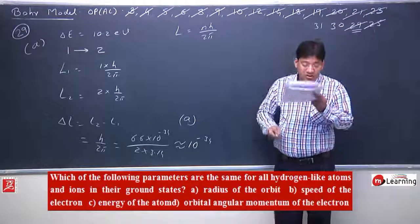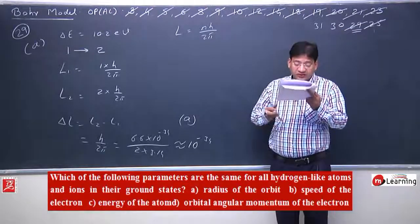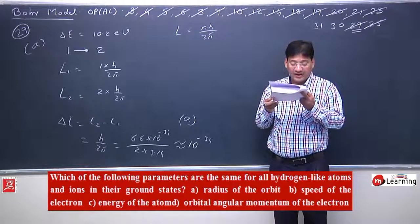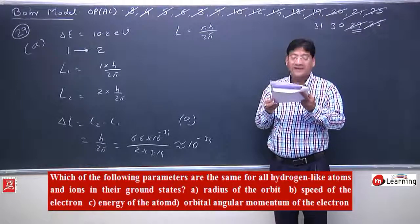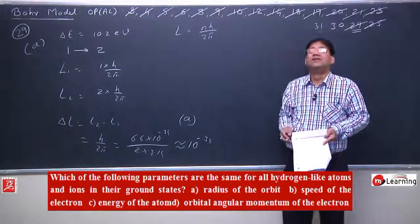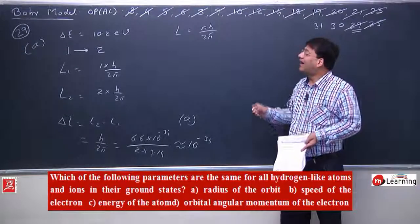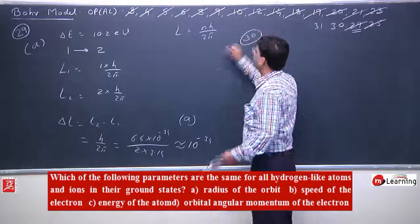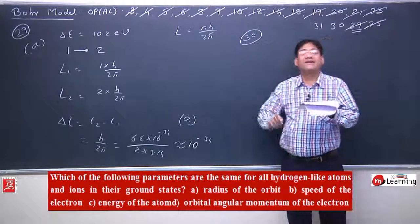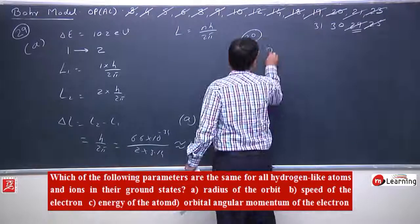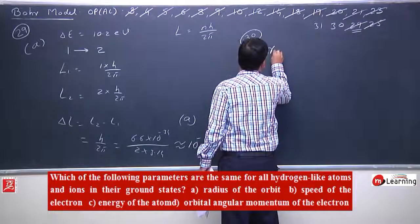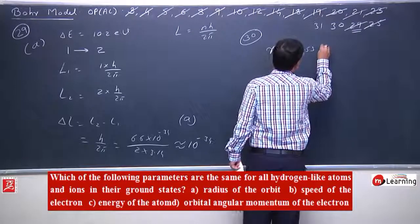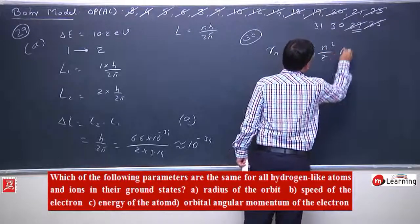Thirtieth objective: which of the following parameters are the same for all hydrogen-like atoms and ions in their ground state? We know that radius is different because radius is given by Rn = 0.53 × N²/Z Angstroms.